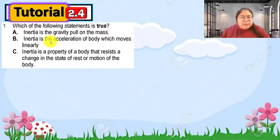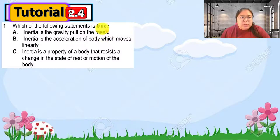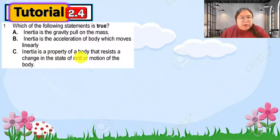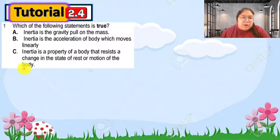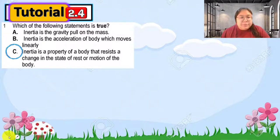The first objective question is about inertia. Which of the following statements is true? Option A: inertia is a gravity pull on the mass. Option B: inertia is an acceleration of a body moving linearly. Option C: inertia is a property of a body that resists change in its state of rest or motion. So inertia means if an object is at rest it continues to rest, and if moving it continues in a straight line. The answer is C.